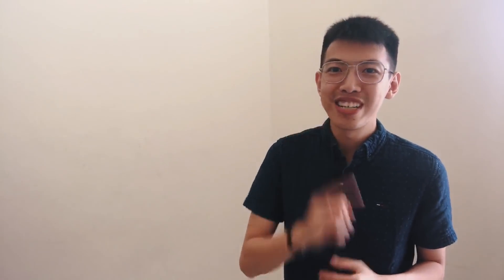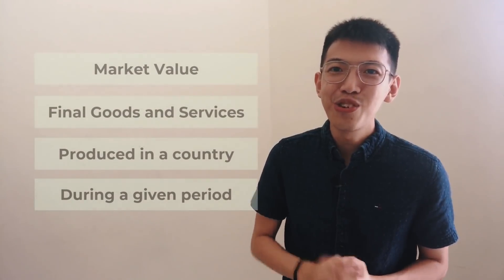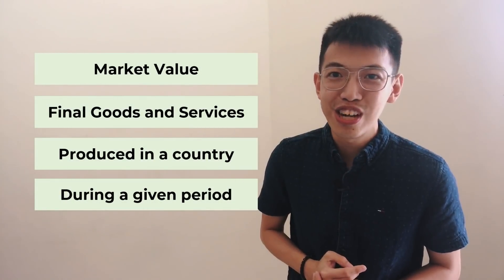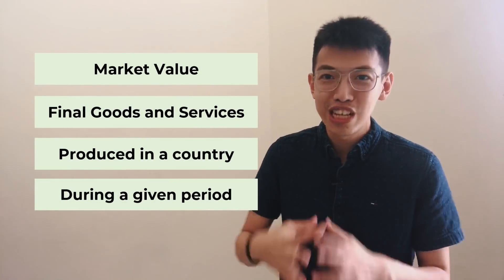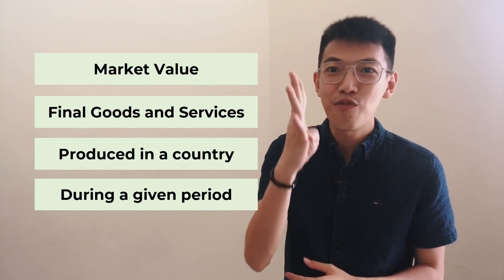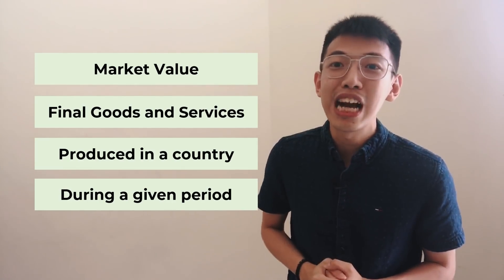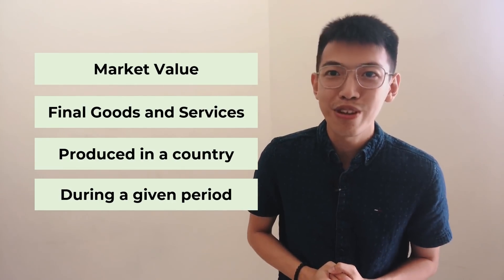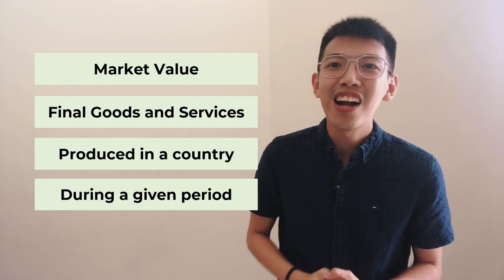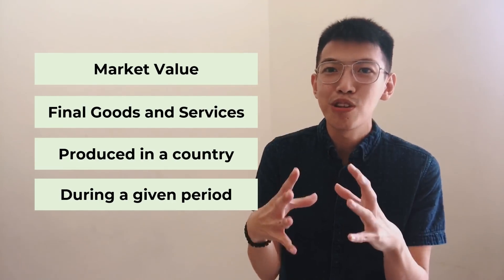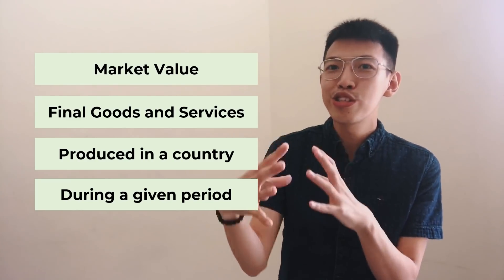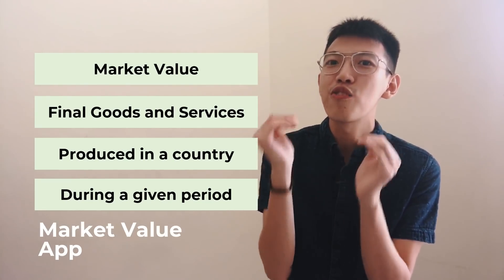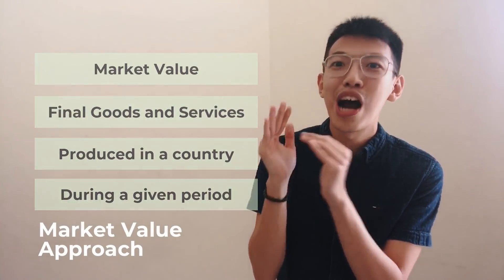So those four things — first, market value; second, final goods and services; third, produced in a country; and fourth, during a given period — are the principles to calculate GDP using the market value approach.